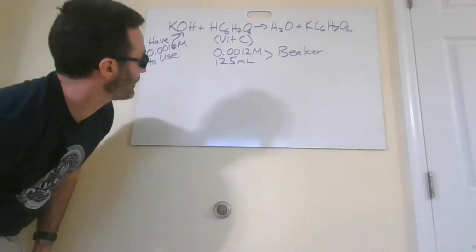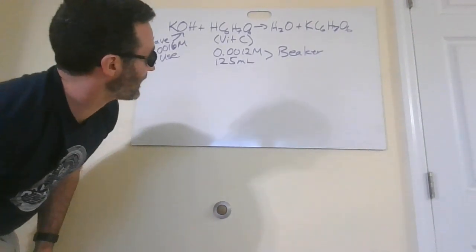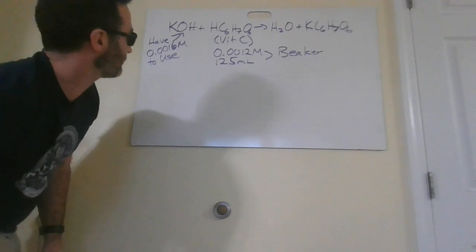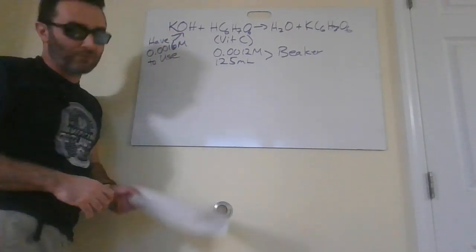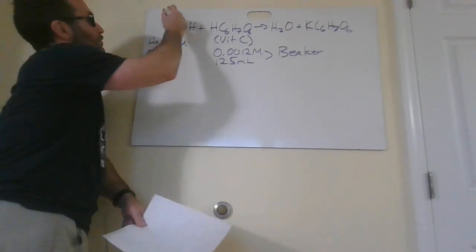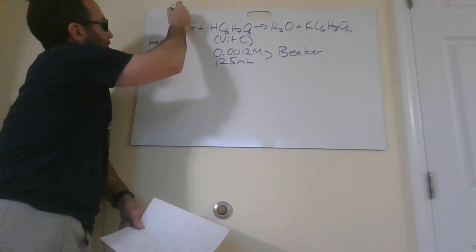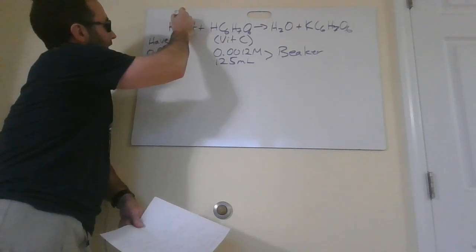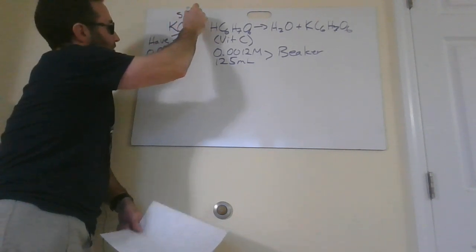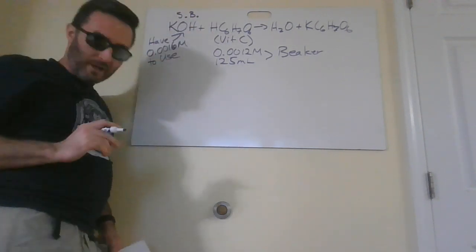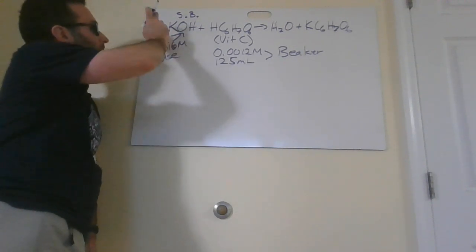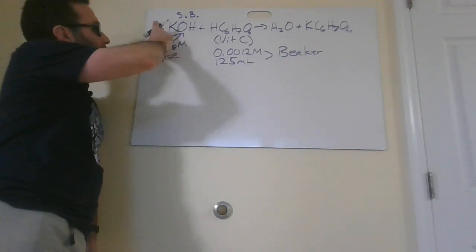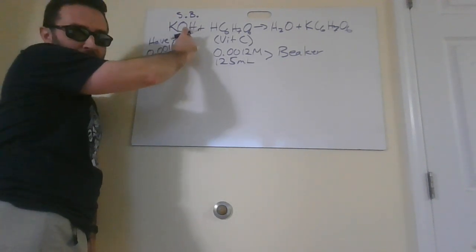Second titration. So this is potassium hydroxide — it's a strong base. When you look at the lessons we went through, how do you know it's a strong base? Group one metal with a hydroxide.